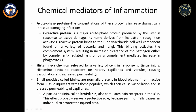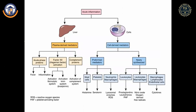Histamine is released by mast cells when injured; it binds to nearby capillaries and venules, increasing vasodilation and permeability, enabling macrophages to enter more easily. Small peptides called kinins are present in plasma in an inactive form; upon tissue injury they activate, causing vasodilation and increased capillary permeability. Bradykinin also stimulates pain receptors, serving a protective role by causing individuals to protect the injured area.